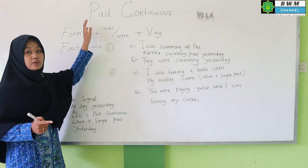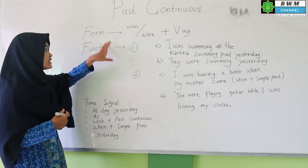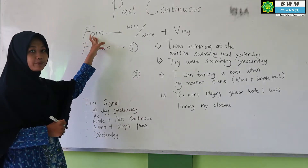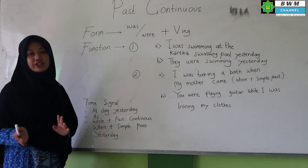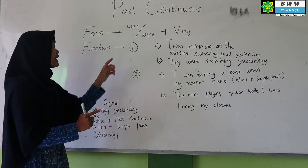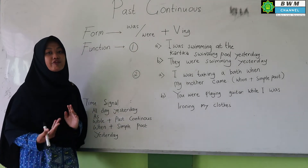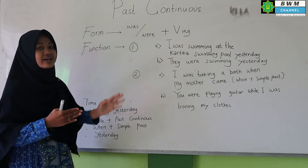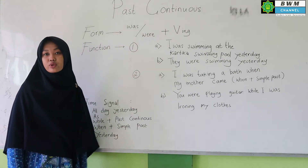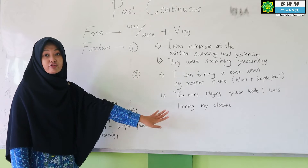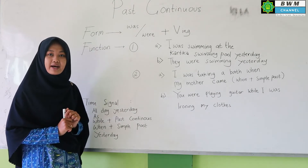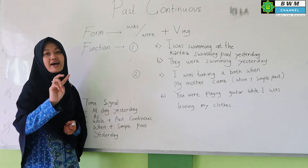Here on the whiteboard you can see the form of Past Continuous. It's actually similar to Present Continuous, but uses past to be. For Present Continuous, to be had three forms: is, am, are. For Past Continuous, to be has two forms: 'was' and 'were.' Was is used for singular subjects: I, he, she, it. Were is used for plural subjects: you, they, we. Note the pronunciation: 'was' not 'wos,' 'were' not 'wer.'